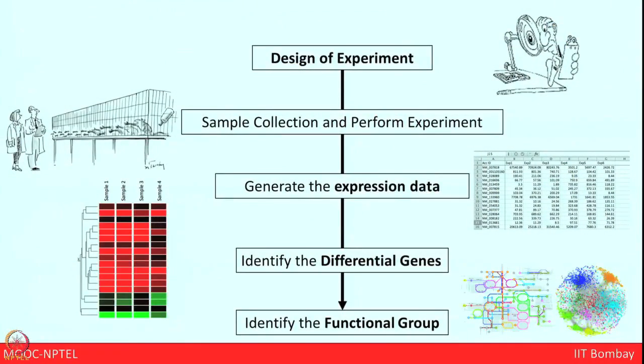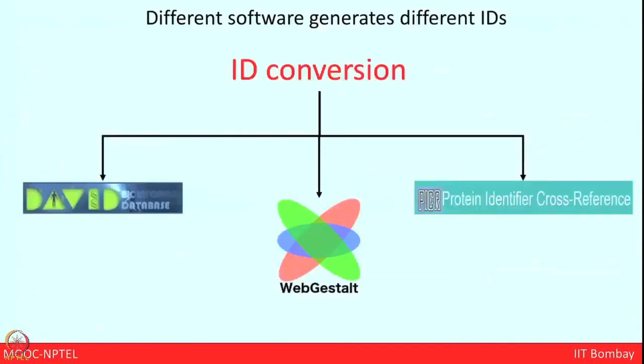In the workflow, the last step after identification of differential genes is to identify the functional group. Different kinds of software generate different IDs — if we are using Proteome Discoverer commercial software or Trans-Proteome Pipeline they will give different kinds of IDs in protein identification. To start tertiary analysis we have to get multiple IDs, and that is possible only through ID conversion. This is a very basic thing, but I want to take a little time to explain how this ID conversion can be done.